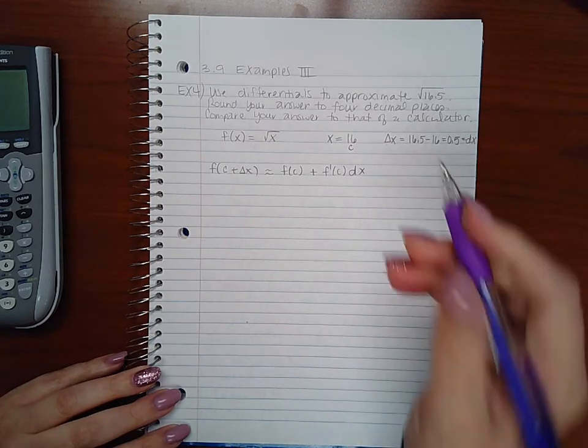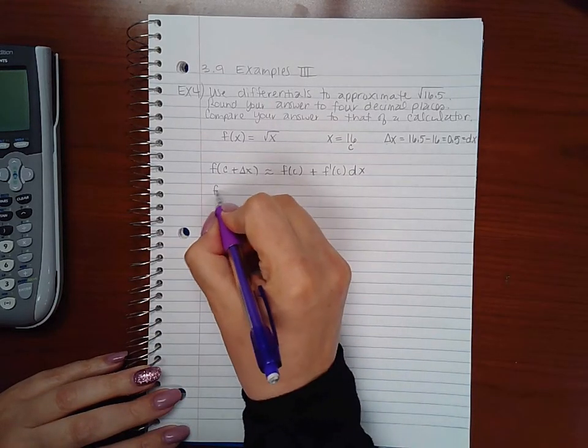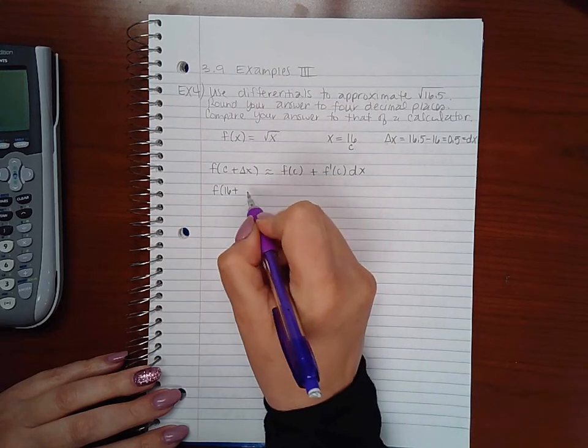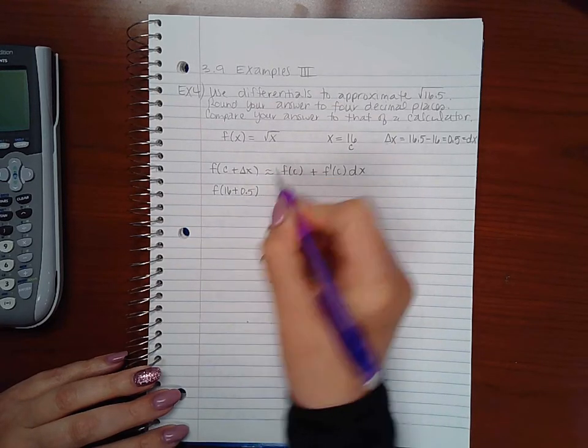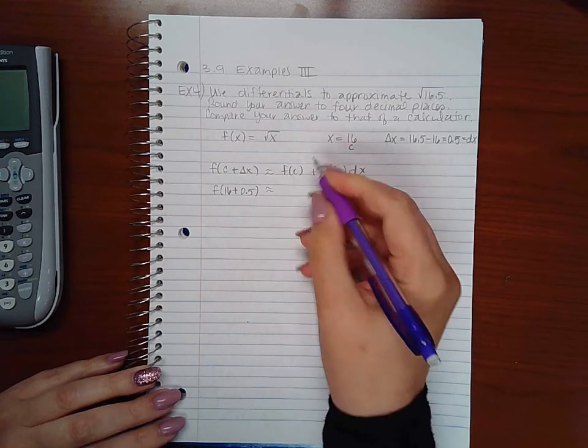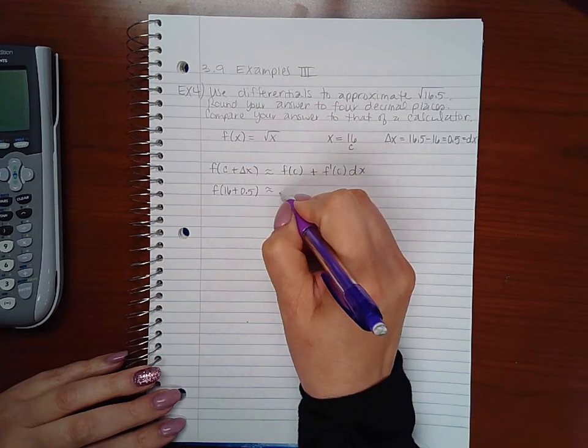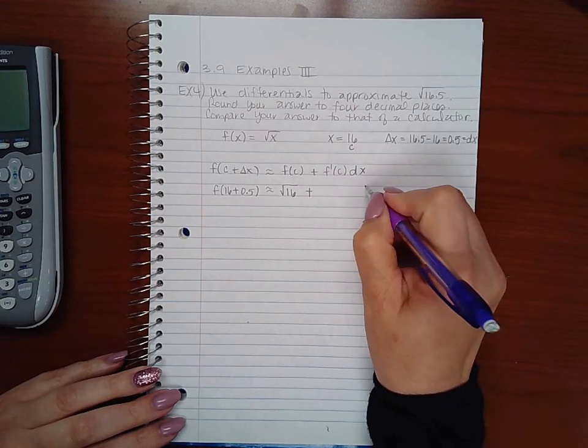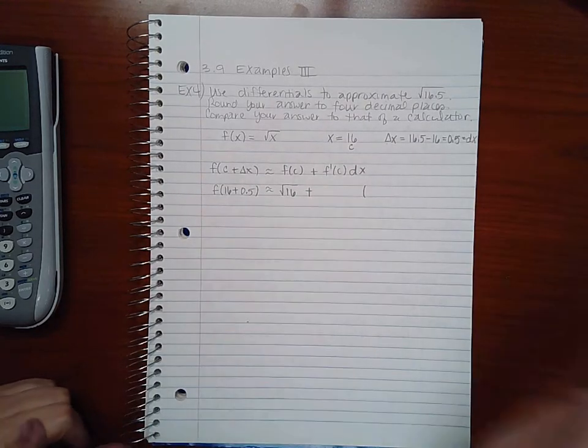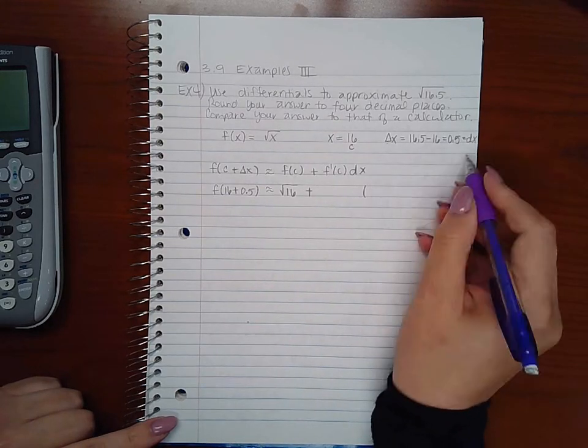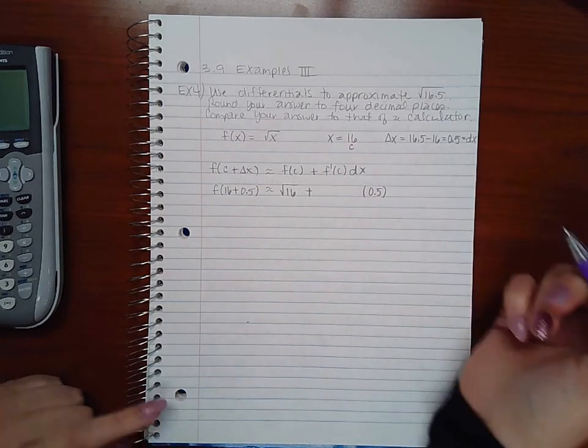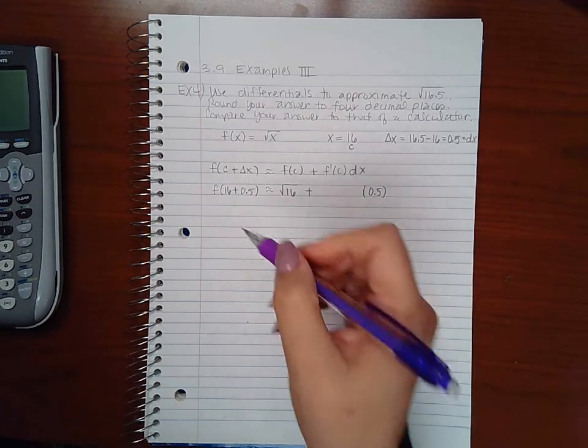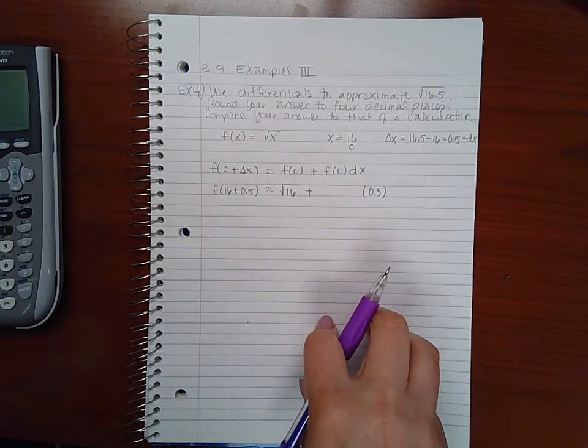This means that I have 16 for my c and delta x is that difference which is 0.5. F of c is going to be the square root of 16. F prime of c I'm not sure just yet because I don't know what f prime is, but dx is also the same increment 0.5. Delta x and dx are usually the same number.